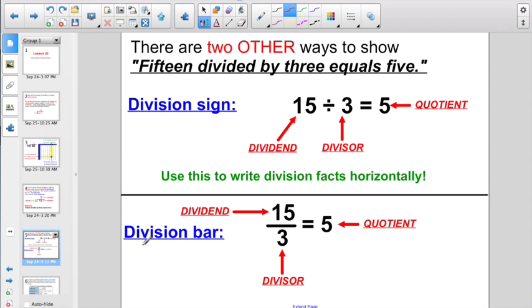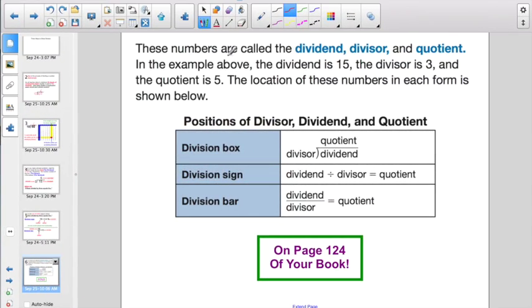Or, we can also use this, which is called a division bar. Kind of looks like an improper fraction, and if you don't know what improper fractions are, we'll get to it in a while. The dividend of 15 would be on top, the divisor of 3 would be on the bottom, and 5 is still your quotient. You would still read it 15 divided by 3 equals 5. So, these numbers are called the dividend, the divisor, and the quotient. In the example above, the dividend is 15, the divisor is 3, and the quotient is 5.